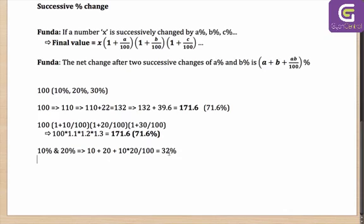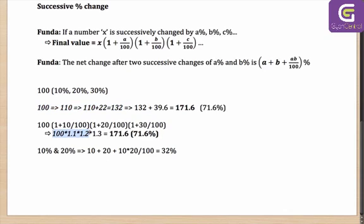As you can see, this is much easier than either of the other methods. In the first method you would have to go from 100 to 110 then apply 20%. In the second method you still have to multiply 1.1 and 1.2. With this formula, the value is correct and you got it directly and very easily, just using A + B + AB/100.